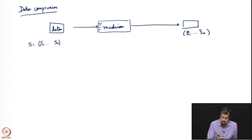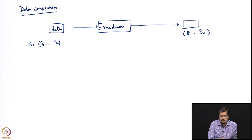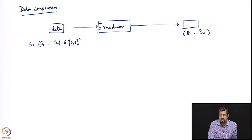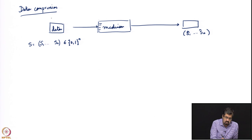For simplicity, we will consider the case where the data is binary — a sequence in {0,1}^n — so this is a sequence of bits, and that is your source.